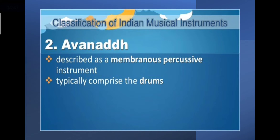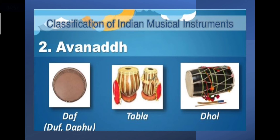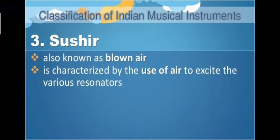Another classification of Indian musical instruments is the Avanaddha — it is described as a membranous percussive instrument, typically comprising drums. The following are examples of Avanaddha instruments.